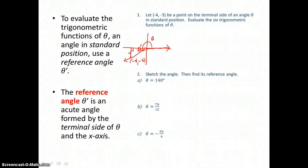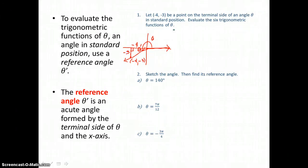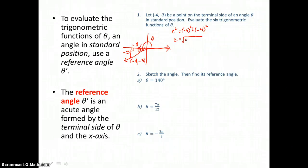So we need to label the legs and hypotenuse of this right triangle. Since we went left 4 units, this leg has a length of 4, and it's in the negative direction. And then we went down 3 units to form this leg, so it's in the negative direction 3 units. To find the hypotenuse, we use the Pythagorean theorem. So c equals the square root of 3 squared, which is 9, and 4 squared, which is 16 — giving the square root of 25, or 5.